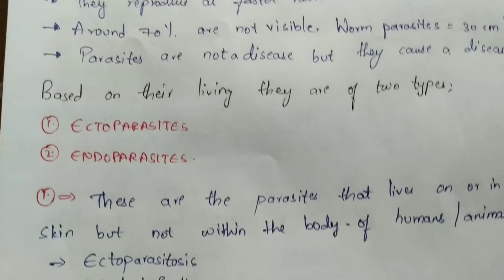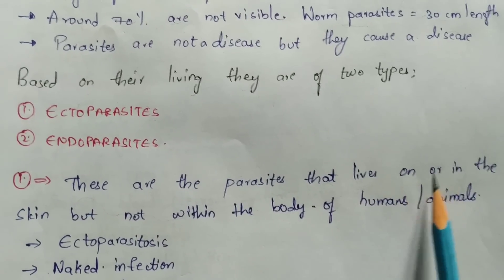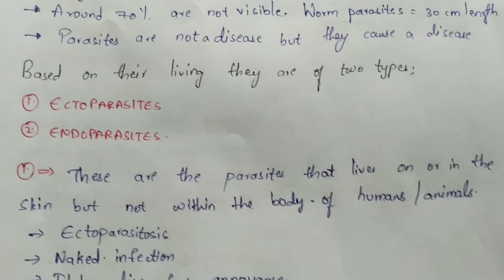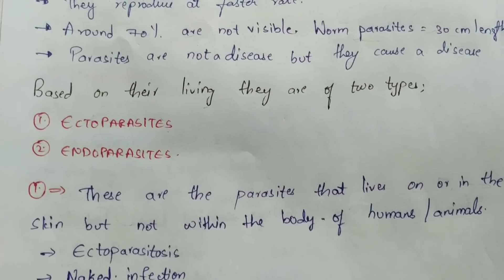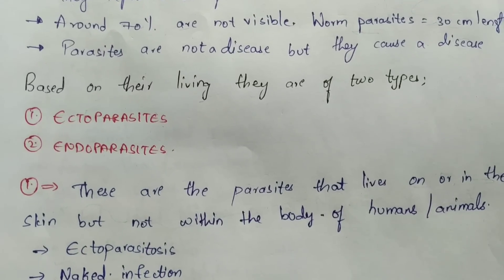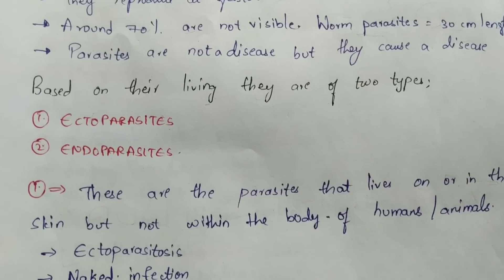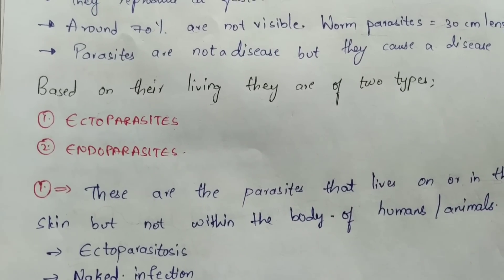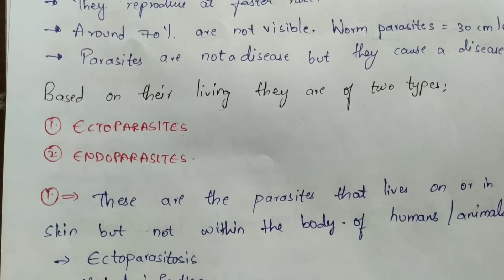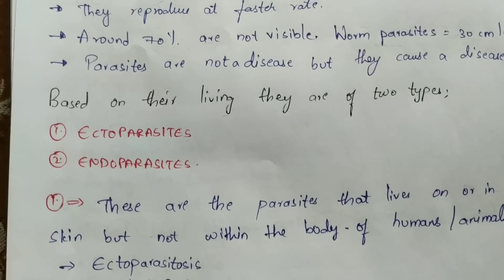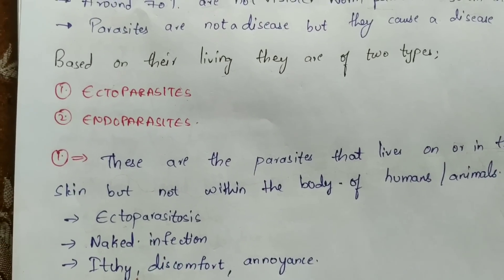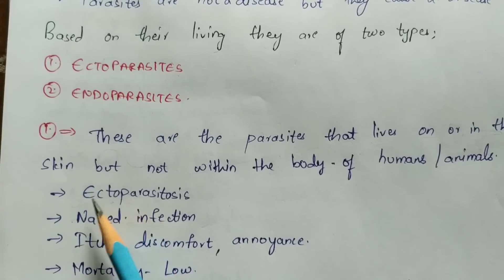Ectoparasites are parasites that live on or in the skin, but not within the body of humans and animals. The worm or insect attacks the skin or enters only into the epidermis or endodermis layer, but does not go deep into the body. It releases parasites that enter the body, but the original — mother — parasite does not enter the body.